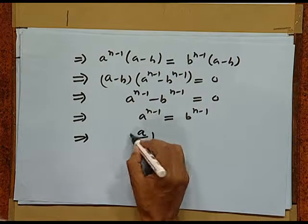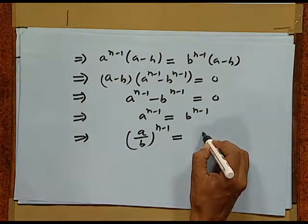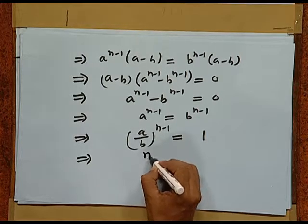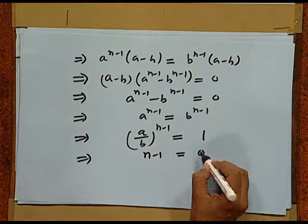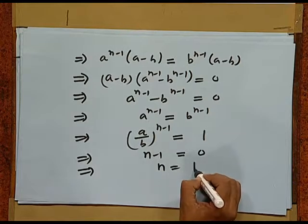Now, since we have assumed that a is not equal to b, so neither of them can be 0, because if b is 0, a is 0 and vice versa. So, neither b is 0 nor a is 0. So, we can write this as a upon b raised to power n minus 1 is equal to 1. Now, you know any number raised to power 0 is 1, and no other index has this property. So, this implies n minus 1 is equal to 0, and this means n equal to 1. So, this gives the answer for the value of n in the given problem.